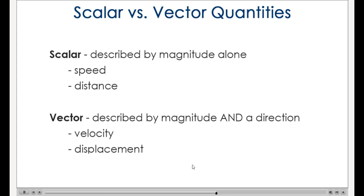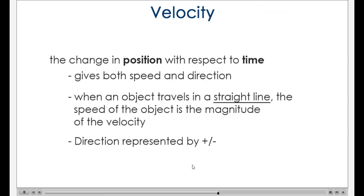Velocity is also a vector quantity and always has a direction associated with it. Velocity is related to speed, but speed and velocity are not the same thing. When we describe motion using velocity, we must indicate a speed, which is the magnitude of the velocity, and a direction.